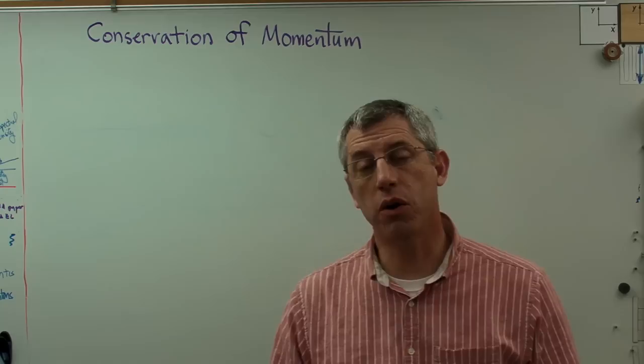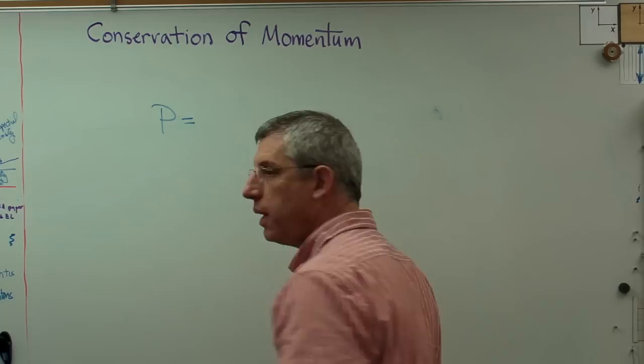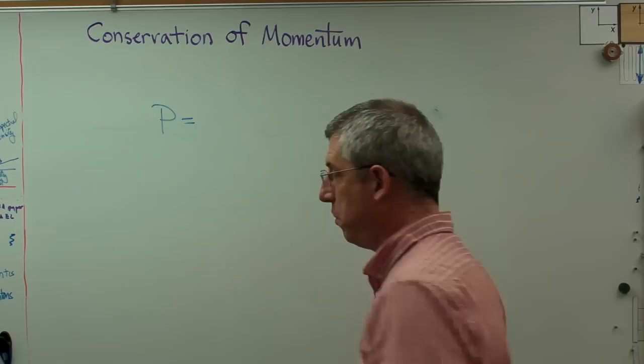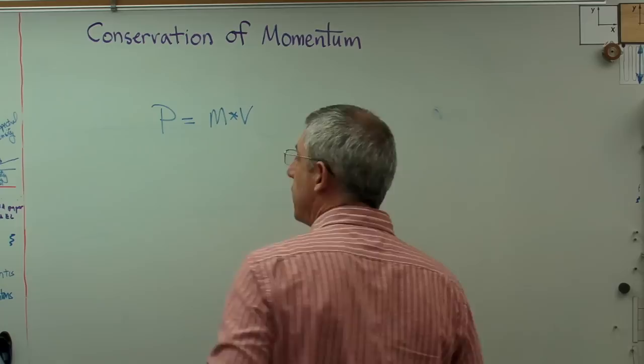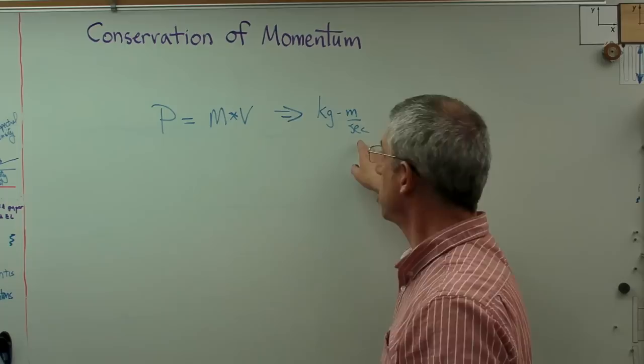First thing we need to know is what the heck is momentum. Momentum is one of these quantities we track in dynamics problems, just like you track kinetic energy in some problems. Momentum is often denoted by the letter P. Why P? I don't know, there's 26 letters in the alphabet, pick something. For some reason we're using P and it's just MV, mass times velocity. If we look at the units, they're pretty straightforward. It's going to be kilogram meters per second in metric units, and that also works out to be Newton seconds.